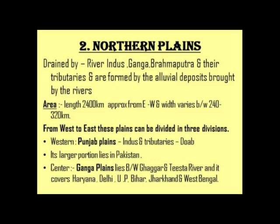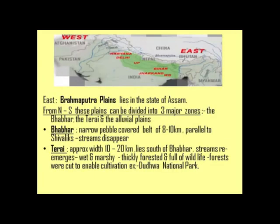After Punjab Plains, Ganga Plains comes. Ganga Plains is located in India's central portion and lies between the Ghaggar and Tista Rivers. It covers the states of Haryana, Delhi, UP, Bihar, Jharkhand, and West Bengal. After Ganga Plains, Brahmaputra Plains are there towards the east, and these Brahmaputra Plains lie in the state of Assam. So moving west to east, we have seen the three divisions of Northern Plains.